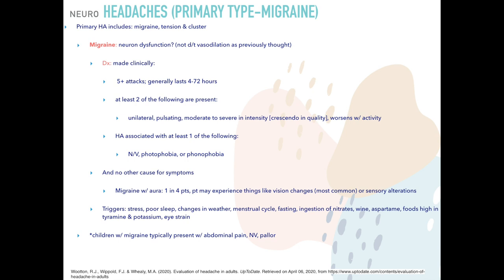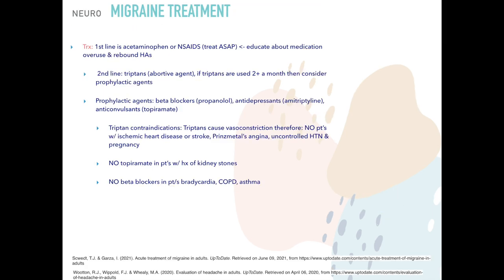Triggers for migraine include stress, poor sleep, changes in sleep or weather, menstrual cycles, fasting, nitrates, wine, aspartame, foods high in tyramine or potassium, and eye strain. Educating patients on triggers is important for quality of life. In children, migraines may present differently — with abdominal pain, nausea, vomiting, and pallor — so keep this in mind with the pediatric population.